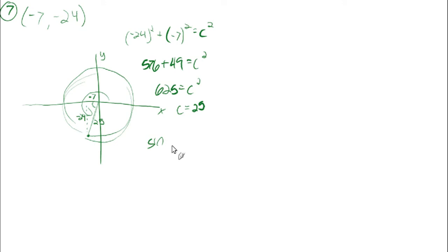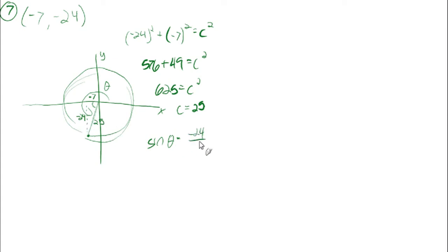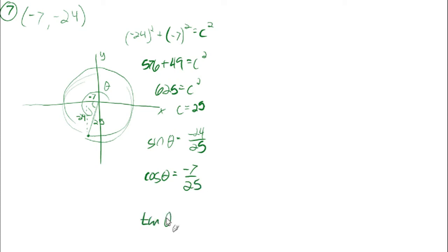The sine of the angle is opposite over hypotenuse, using negative values for the sides — negative 24 over 25. The cosine is adjacent over hypotenuse, negative 7 over 25. The tangent is opposite over adjacent, negative 24 over 7.